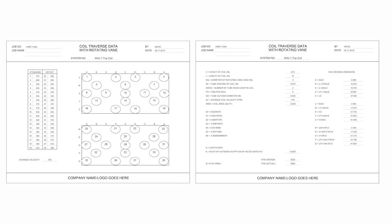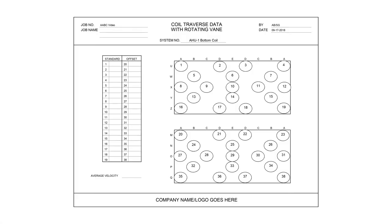Also, as the velocity readings are entered on page 2, the K-factor and the CFM actual values are automatically calculated on page 1. This completes the data and calculations for AHU-1 Top Coil. Next, repeat this process for AHU-1 Bottom Coil.